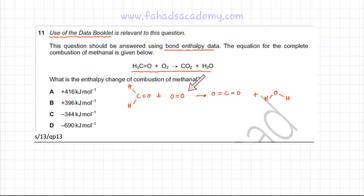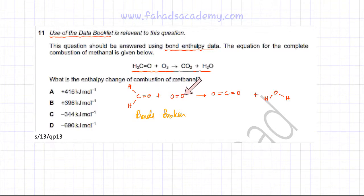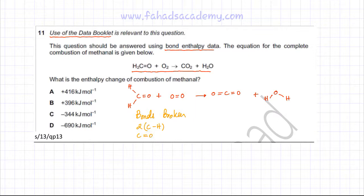We're going to first focus on the bonds that are being broken. As you can see, there are two carbon-hydrogen bonds that would be broken. There is also a C double bond O bond that would be broken, plus an oxygen double bond oxygen that would also be broken. So the bonds broken are: two C-H bonds, one C=O bond, and one O=O bond.